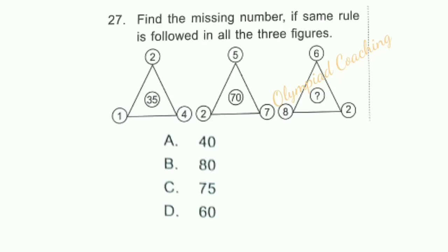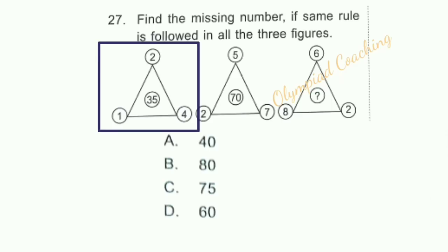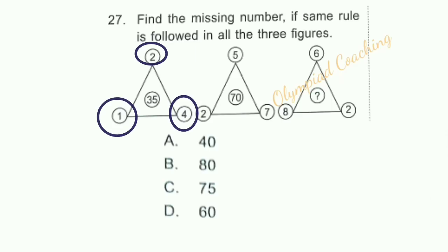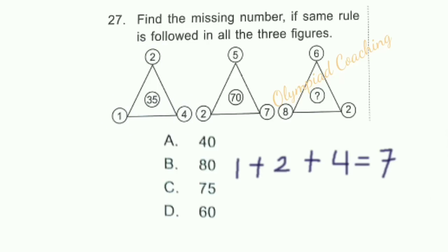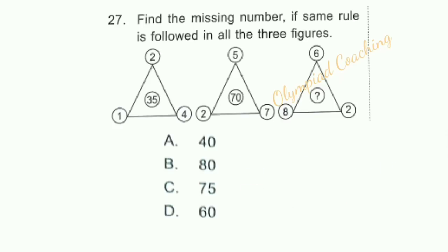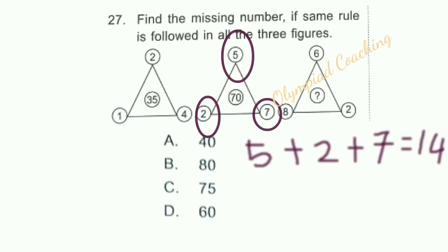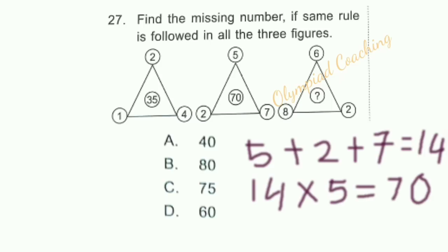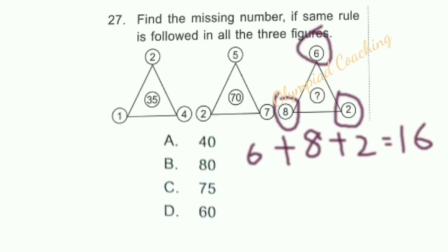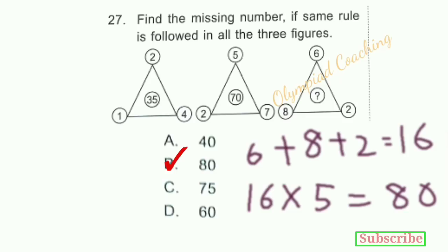Question number 27: Find the missing number if the same rule is followed in all three figures. Consider the first figure — sum of all three numbers at the vertex: 1 + 2 + 4 = 7. Now multiply 5 with 7: 7 × 5 = 35. Similarly, sum of three numbers at the vertex: 5 + 2 + 7 = 14. Multiplying 5 with 14 = 70. Following the same pattern: 6 + 8 + 2 = 16. Multiplying 5 with 16, we get 80. So option B is correct — 80.